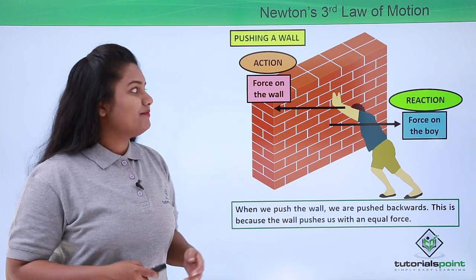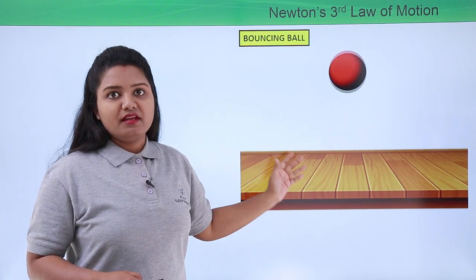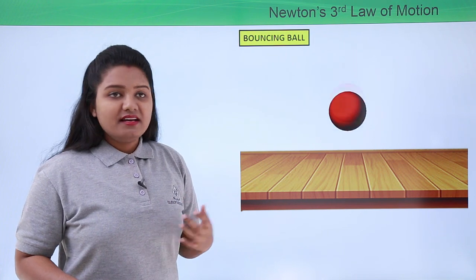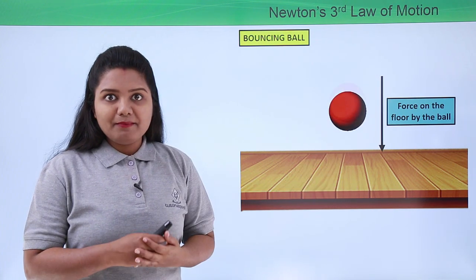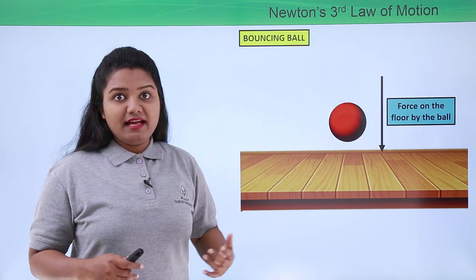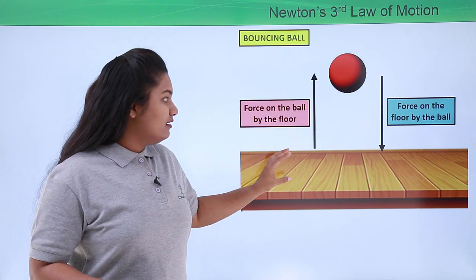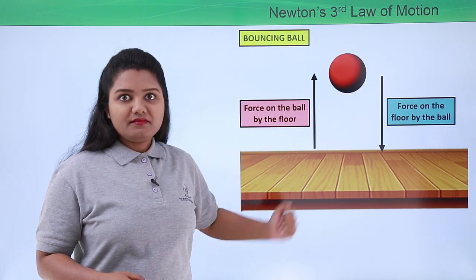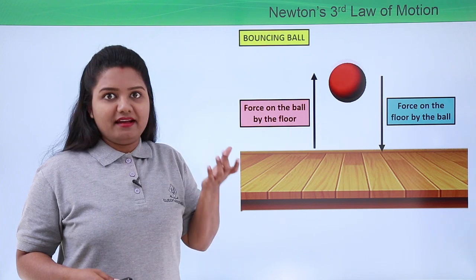Now let us look at another example. Here a ball is bouncing when it hits the floor. When the ball hits the floor, it exerts a force onto the floor — that is the force on the floor by the ball. In return, the floor exerts an equal amount of force back onto the ball, as a result of which the ball bounces upwards. So a force is also exerted by the floor onto the ball, and when the ball hits the ground it bounces back into the air.